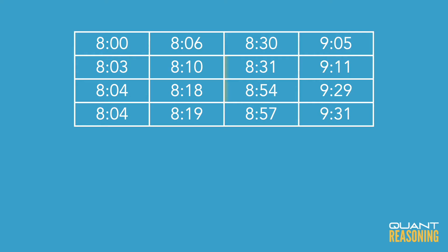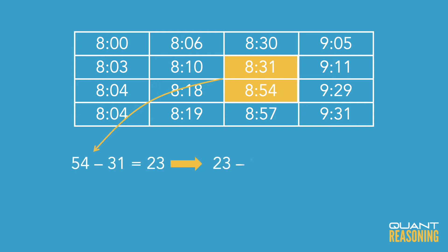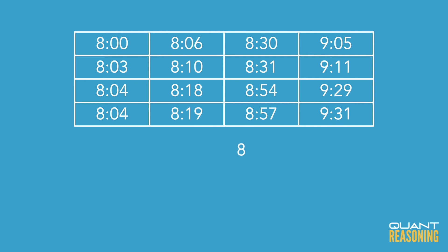Looking at the times in the table, there's a longer stretch of time — longer than 15 minutes — between 8:31 and 8:54. That's 23 minutes, of which the light would have been off for 8 minutes, because after 15 minutes it switches off and you have 8 minutes remaining. So the light turned off for 8 minutes in that window.